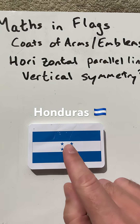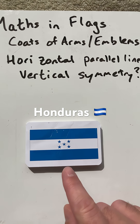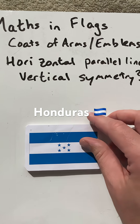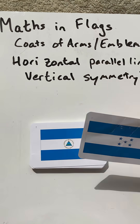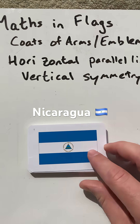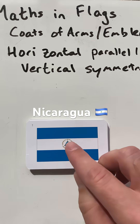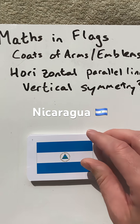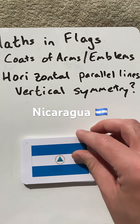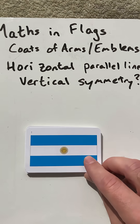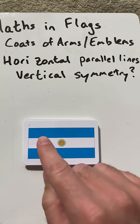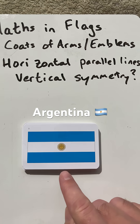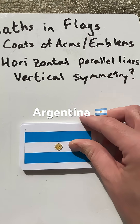Honduras definitely has a vertical line of symmetry — either side would be the same. Here we have Nicaragua, but the words stop it from having vertical symmetry. Argentina has horizontal parallel lines and a vertical line of symmetry.